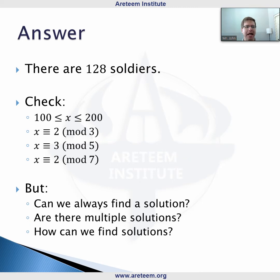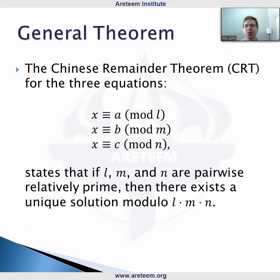Let's take a look at the actual general theorem. The Chinese remainder theorem for three equations: x ≡ a (mod l), x ≡ b (mod m), x ≡ c (mod n). This does work in general. You could have two equations, three equations, four equations, any number of equations. As long as all of the mods are pairwise relatively prime.